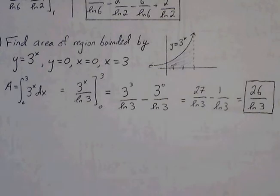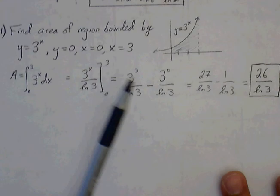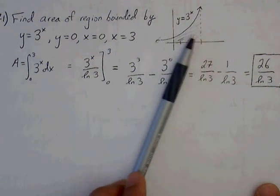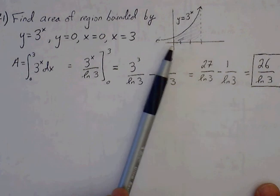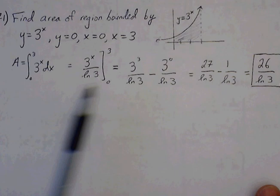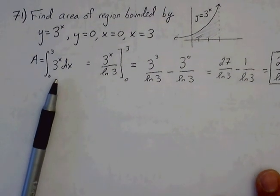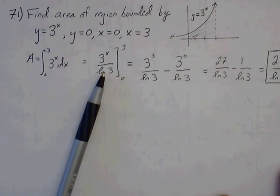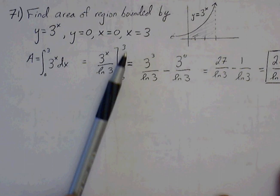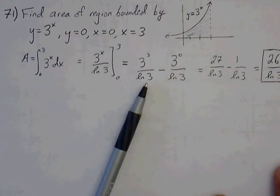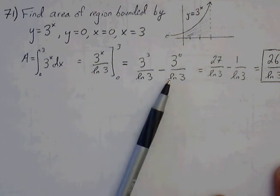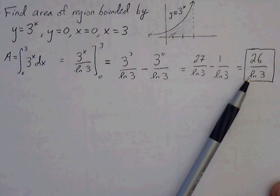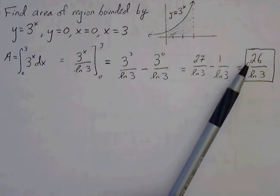Problem 71 finds the area of the region bounded by y equals 3 to the x, y equals 0, and x from 0 to 3. That's the region between the curve and the x-axis, vertically between x = 0 and x = 3. We write the integral of 3 to the x from 0 to 3. The antiderivative is 3 to the x over ln of 3 — no u-substitution needed, so bounds stay the same. Plugging in: 3 cubed over ln 3 minus 3 to the zero over ln 3 equals 27 over ln 3 minus 1 over ln 3, giving 26 over ln 3.